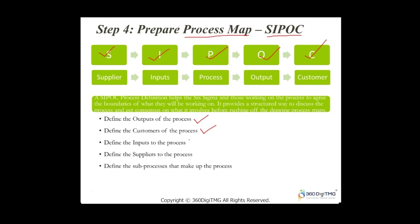Let's look at an interesting example — making tea. The supplier is a husband and also the supermarket, because you need inputs from both. The inputs are tea bags, kettle, electricity, water, milk, and cup. The sub-processes are: add water to the kettle, add tea bag to the cup, and make tea. The output is a cup of tea, which is served to your wife. If she's unhappy — well, we know what happens.